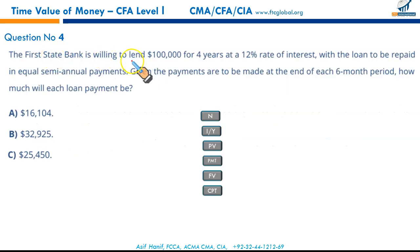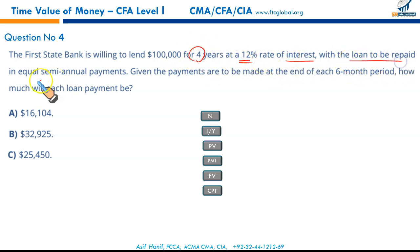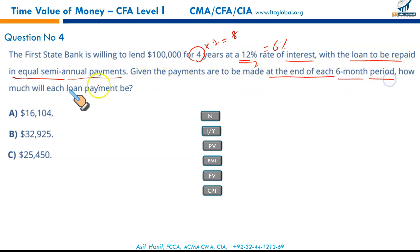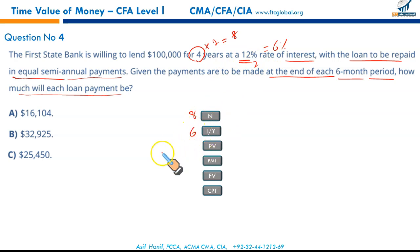The First State Bank is willing to lend $100,000 for four years at 12% interest, with the loan to be repaid in semi-annual payments. Four years must be converted into semi-annual payments: eight payments. Interest must be divided by 2, giving 6% — that's important. Payments are made at the end of each six months.